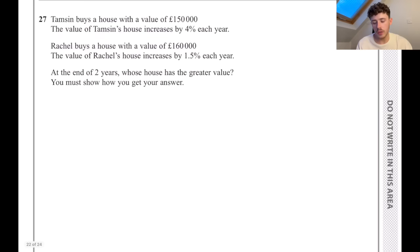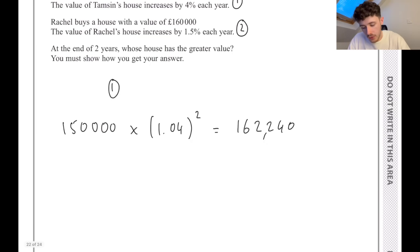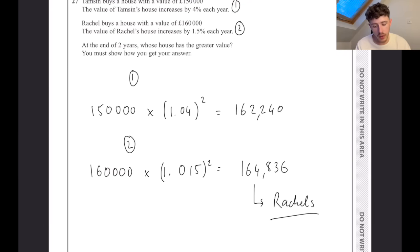Tamsin buys a house with a value of £150,000. The value increases by 4% each year. Rachel buys a house with a value of £160,000, but it increases by 1.5% every year. At the end of two years, whose house has the greater value? This is compound interest - you have this in your formula sheet. So £150,000 multiplied by 1.04 because it's a 4% increase, and then we do that to the number of years as a power, so two years. If I repeat exactly the same thing with the second one and put that in the calculator, you can see that Rachel's house will be the higher valued house.